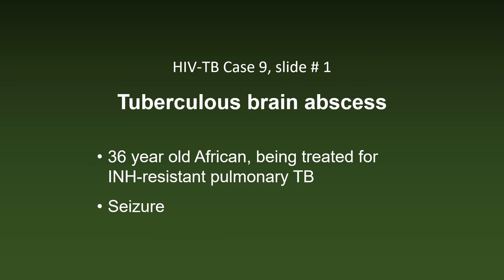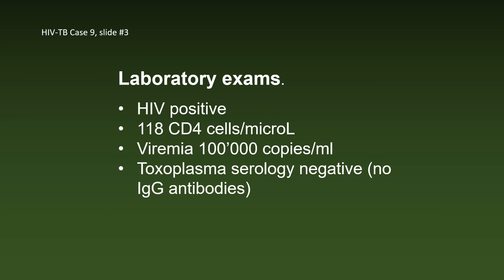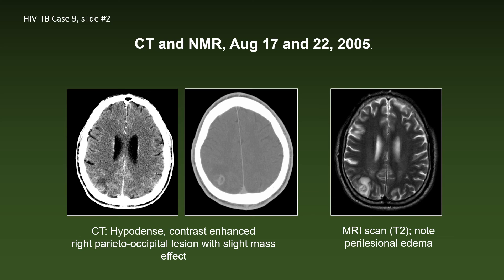Case 9 was a 36-year-old African being treated for INH-resistant pulmonary TB who had a seizure. He was HIV-positive with 118 CD4 cells, a viremia of 100,000 copies per ml, and his toxoplasma serology was negative — he had no IgG antibodies. The CT scan showed a hyperdense, contrast-enhanced right parieto-occipital lesion with very slight mass effect. The perilesional edema is particularly evident in the MRI scan.